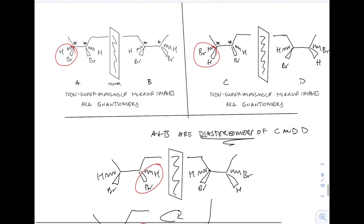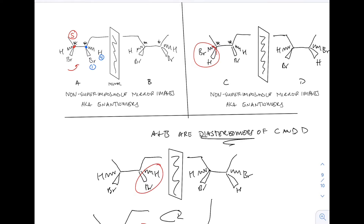We can also confirm by designating the stereocenters as R or S. Let's focus on compound A and the first carbon indicated with the red dot. We give bromine the highest priority, hydrogen is four, and then we assign two and three according to the Cahn-Ingold-Prelog rule. That gives us a counterclockwise rotation, which is the S configuration. Now checking the blue dot: bromine is one, hydrogen is four, the substituent on the left is two, and upper right is three — giving a clockwise rotation and an R configuration. So compound A is S,R.